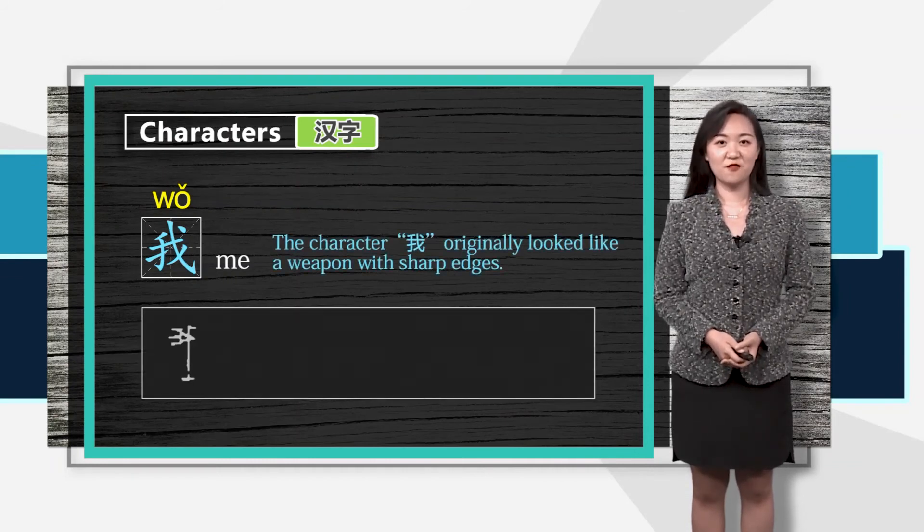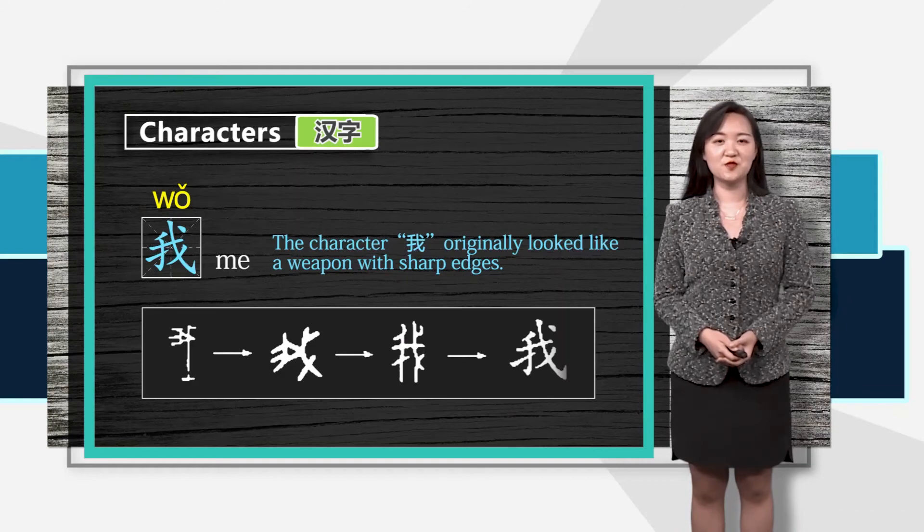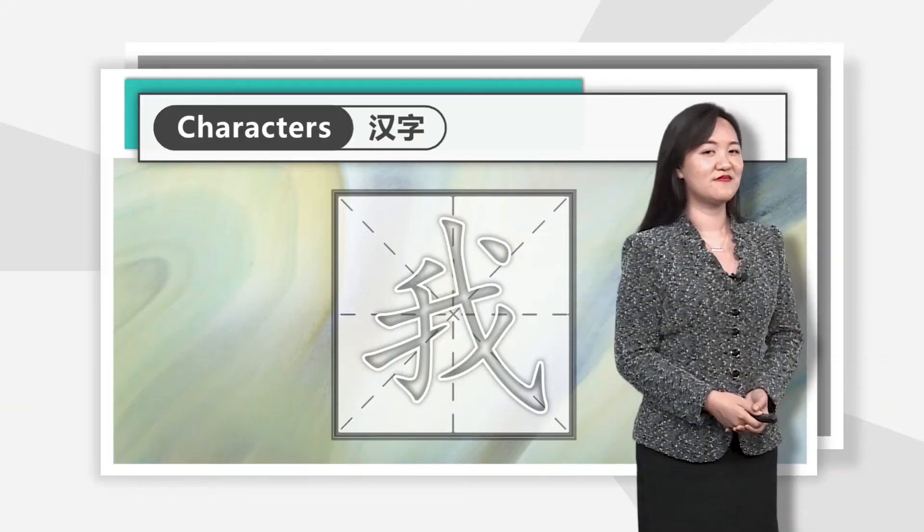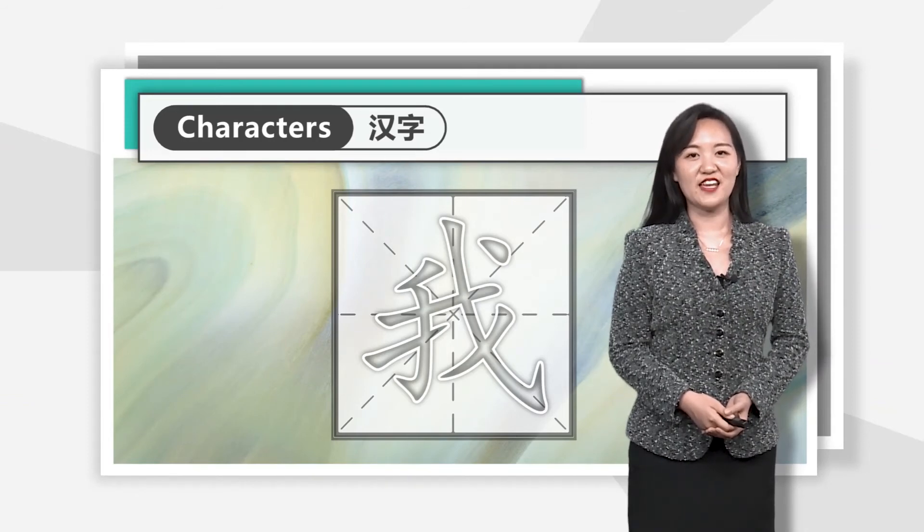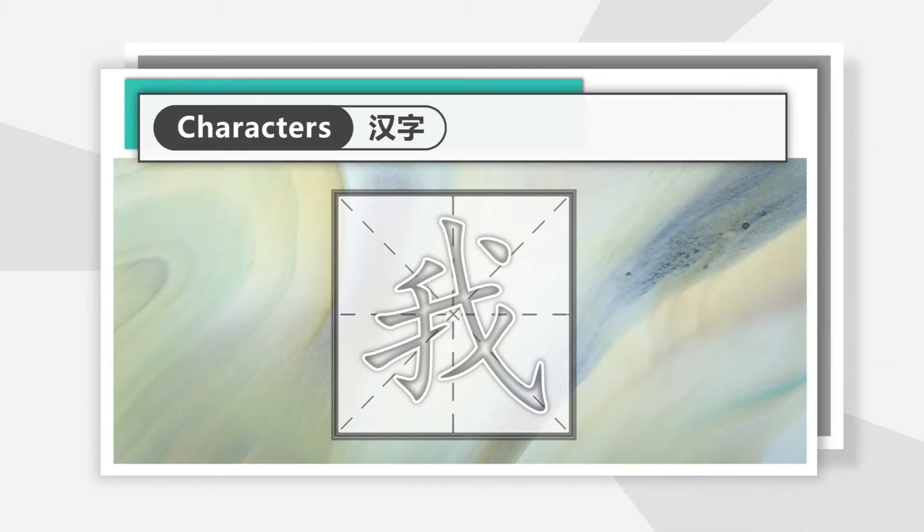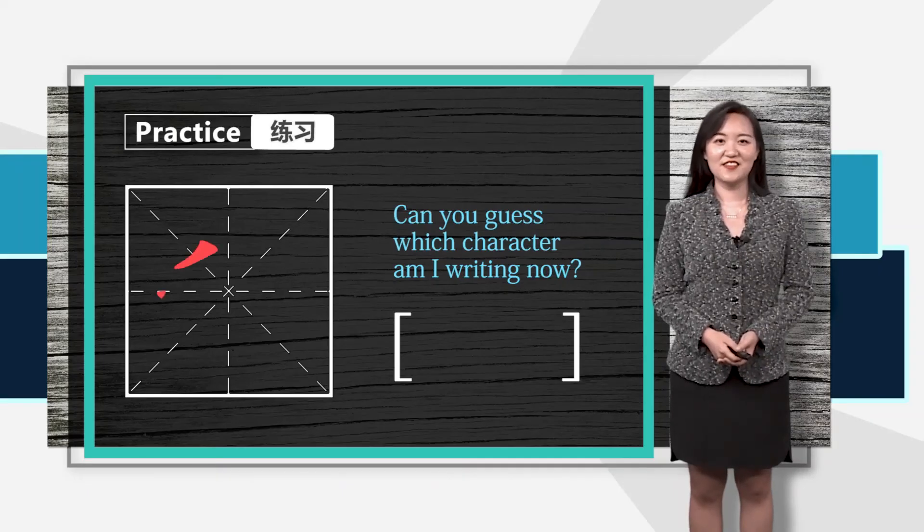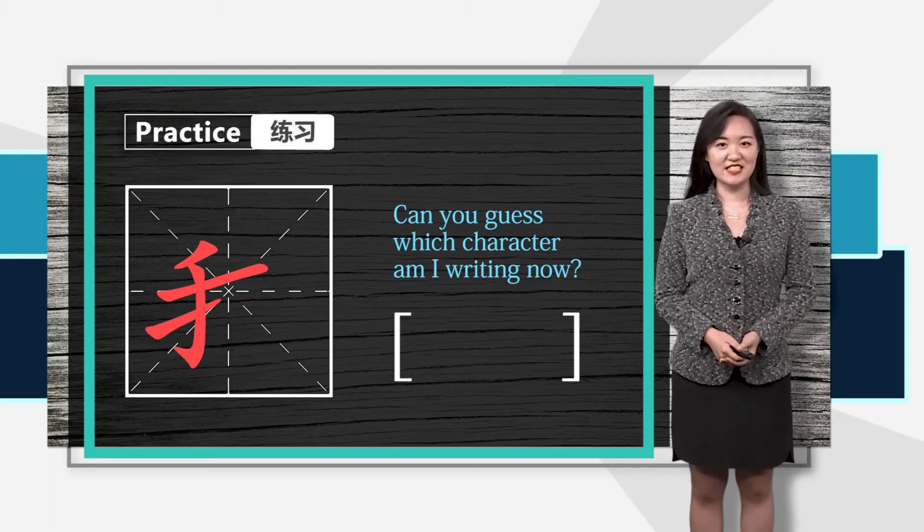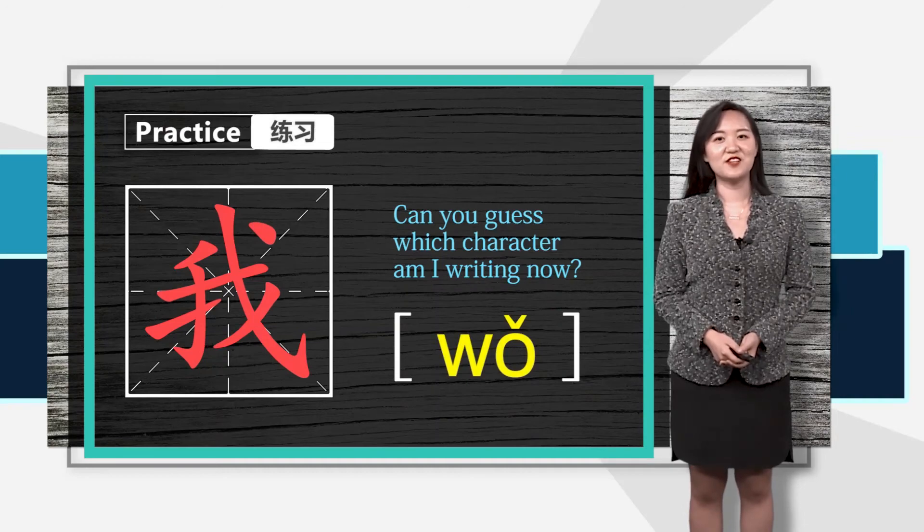The original form of 我 looks like a weapon with sharp edges. Now, this character is a personal pronoun. Let's write it down together and pay attention to the writing order. Let's do some practice. Can you guess what character am I writing now? That's right, I am writing 我.